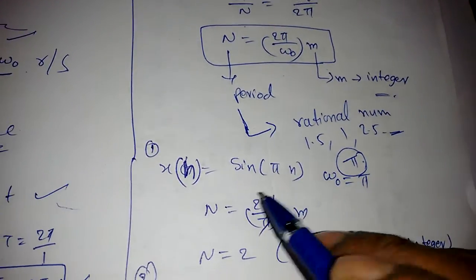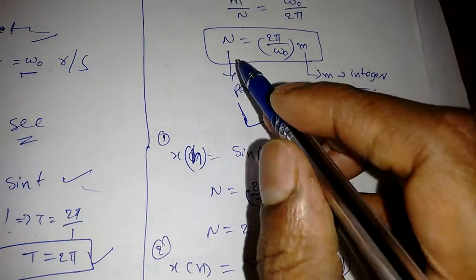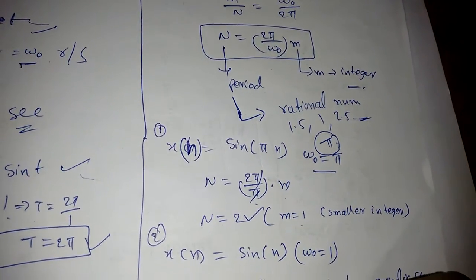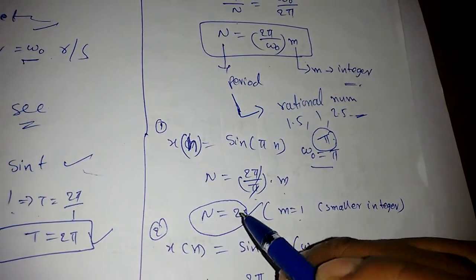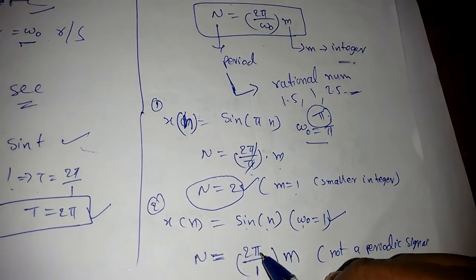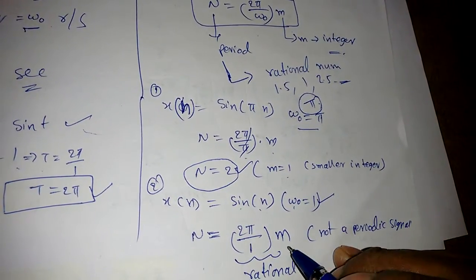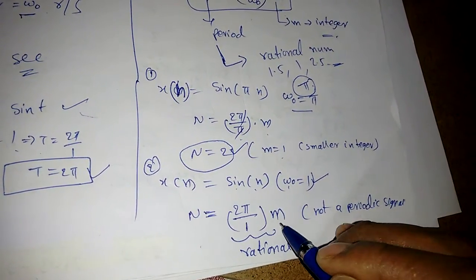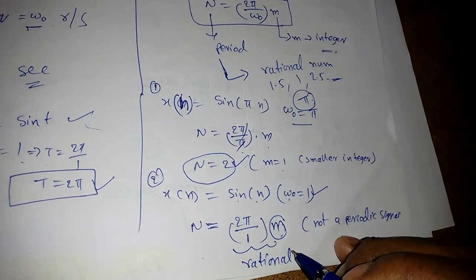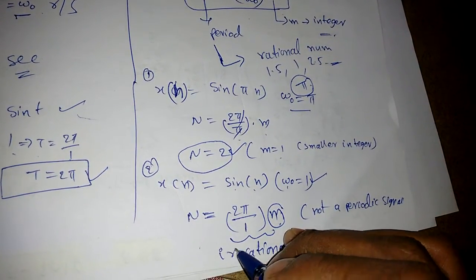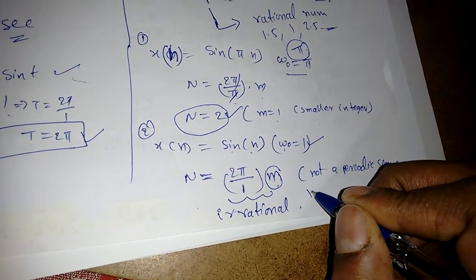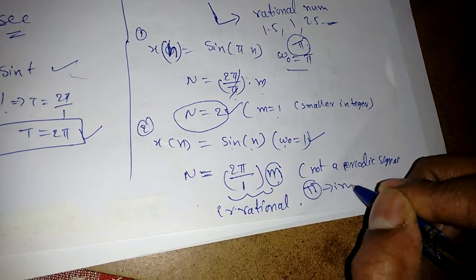For example, x[n] = sin(πn) has ω₀ = π, so N = (2π/π)·m = 2m. For m = 1, N = 2, which is an integer — so this is periodic. But for x[n] = sin(n), ω₀ = 1 and N = 2π·m. Since 2π is irrational for any integer m, N is irrational and this signal is not periodic.